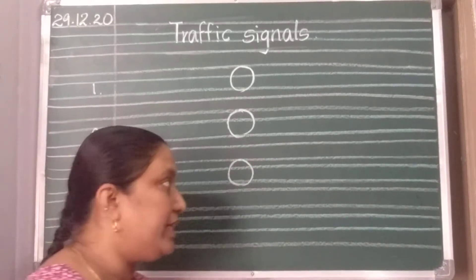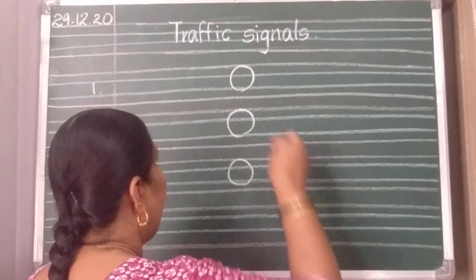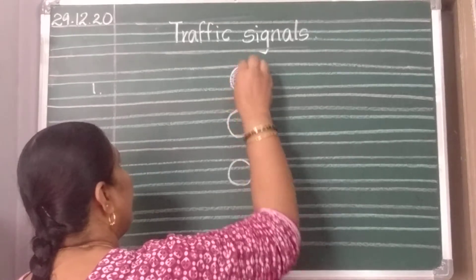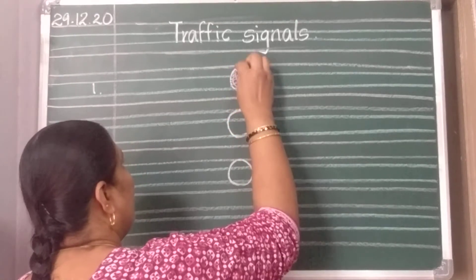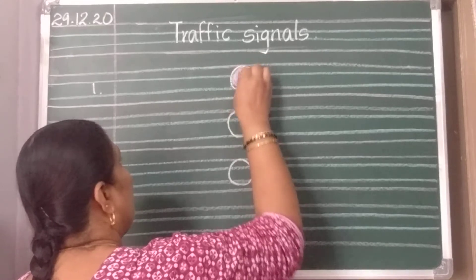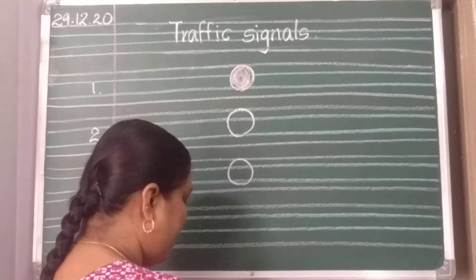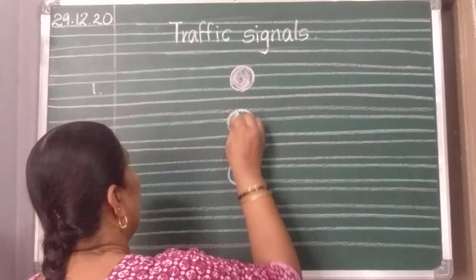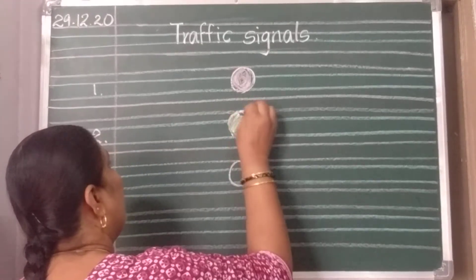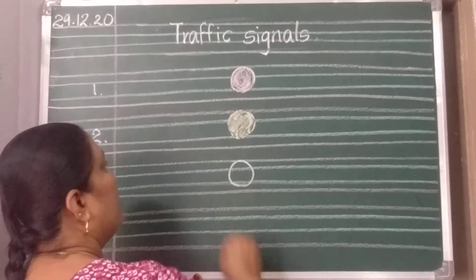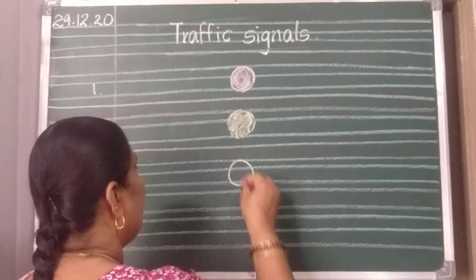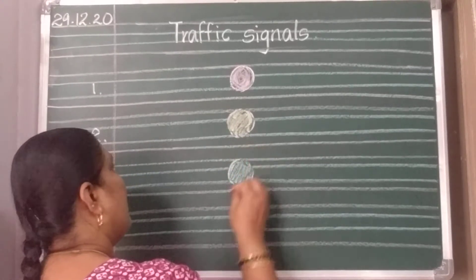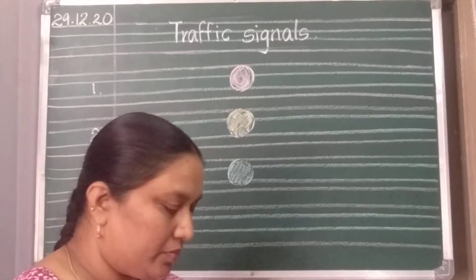And you should color the circles. First, it should be red in color — color it with the red crayon. Next one, yellow. Then the last one is green. Color them like this.